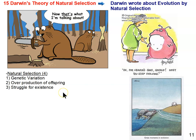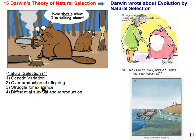Finally, we have differential survival and reproduction. Differential is a key word — certain individuals of the same species are going to survive and reproduce whereas others don't. Some individuals are going to survive and reproduce, and others aren't. The same applies to competition between species: some species are going to survive and reproduce while others don't. That's a concept known as species selection.